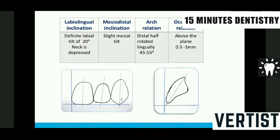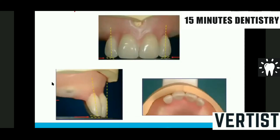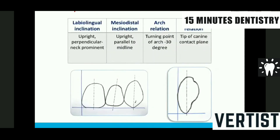Maxillary lateral incisor should be slightly more mesially tilted, slightly more labially tilted. It rotates in the arch form to a tune of 45 to 55 degrees, and it should be placed 0.5 to 1 mm above the occlusal plane. The teeth are labially inclined, higher than the occlusal plane, and more labially inclined than the central incisor.